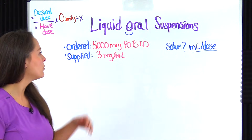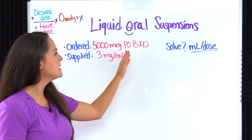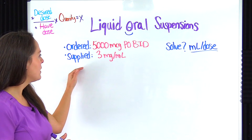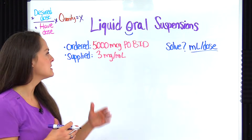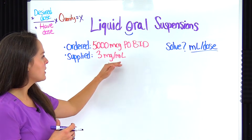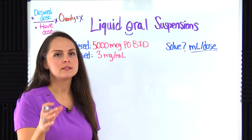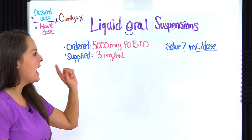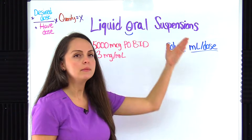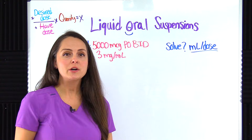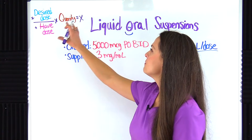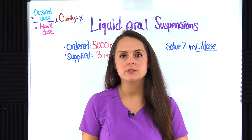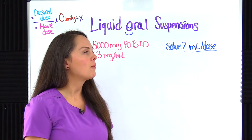Our problem says that we're ordered to give 5,000 micrograms PO BID — by mouth twice a day. We're supplied with from pharmacy a bottle that reads 3 milligrams per mL. So every mL of this liquid oral suspension we pour out, we're going to give 3 milligrams. We need to solve for how many milliliters per dose we're going to give, using the desired over have formula method. If you prefer ratio proportion or dimensional analysis, I have videos for those too.